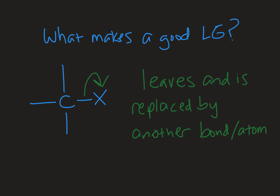Welcome to Chemistry with Caroline. In this video we're going to look at what makes a good leaving group. A leaving group can either be an atom or a group of atoms that leaves over the course of a reaction and is replaced by another atom, group of atoms, or a bond. The leaving group can leave either at the same time that the new atom or group is coming in, or in a separate step, depending on the reaction mechanism. We're going to look at what makes a good leaving group and what trends we can apply across a number of systems.